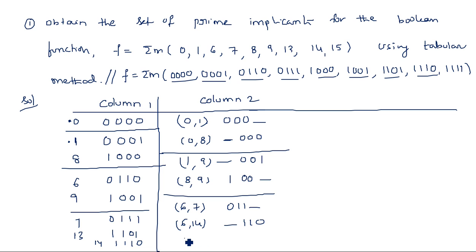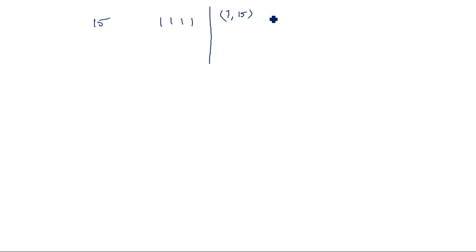Continuing Column 2 comparisons: (9,13) gives 1-01, and from groups 3 and 4: (7,15) gives -111, (13,15) gives 11-1, (14,15) gives 111-.